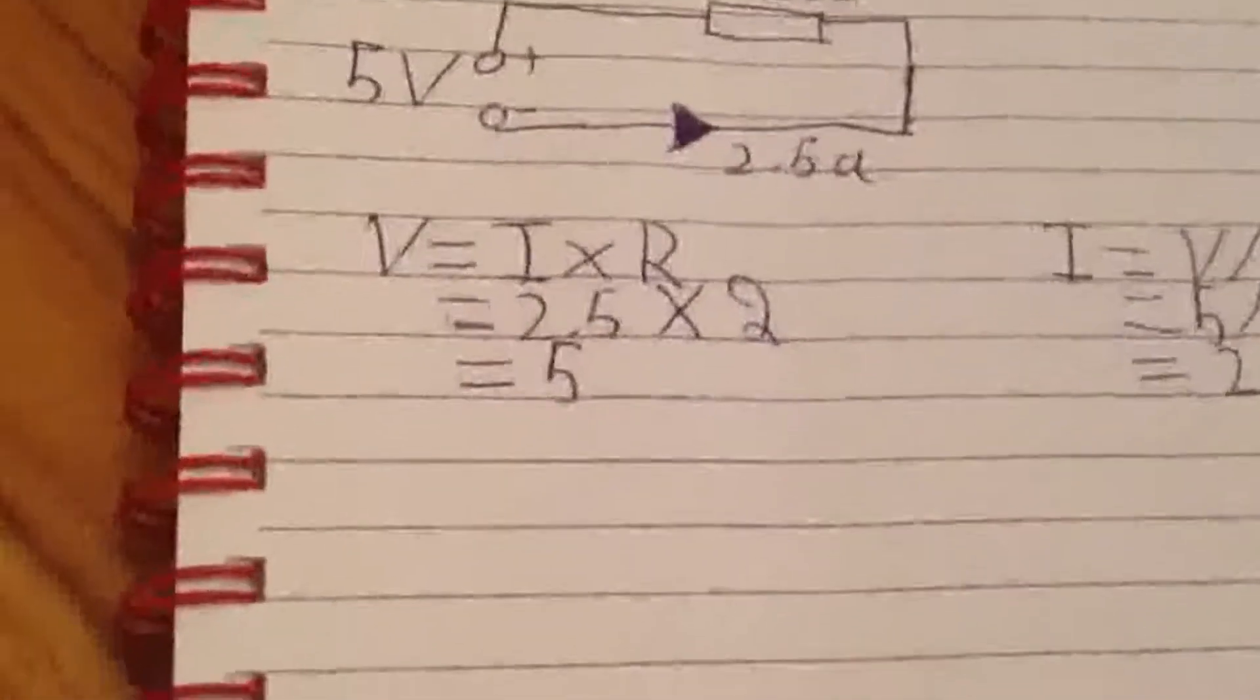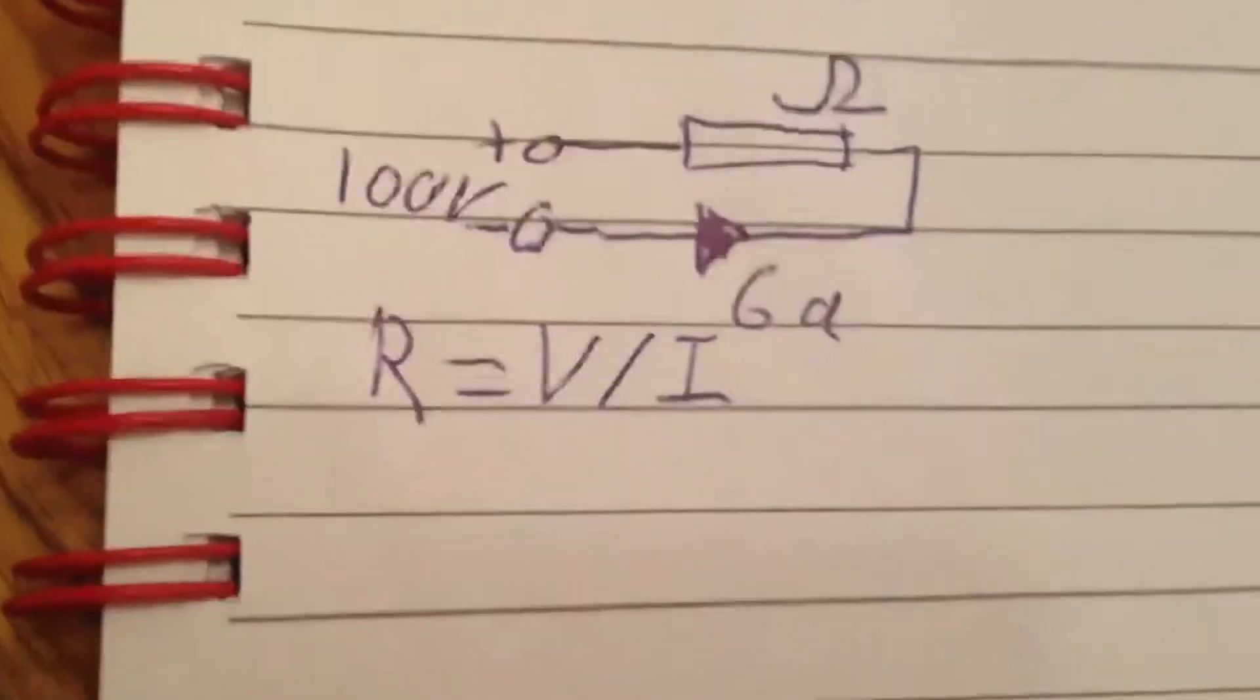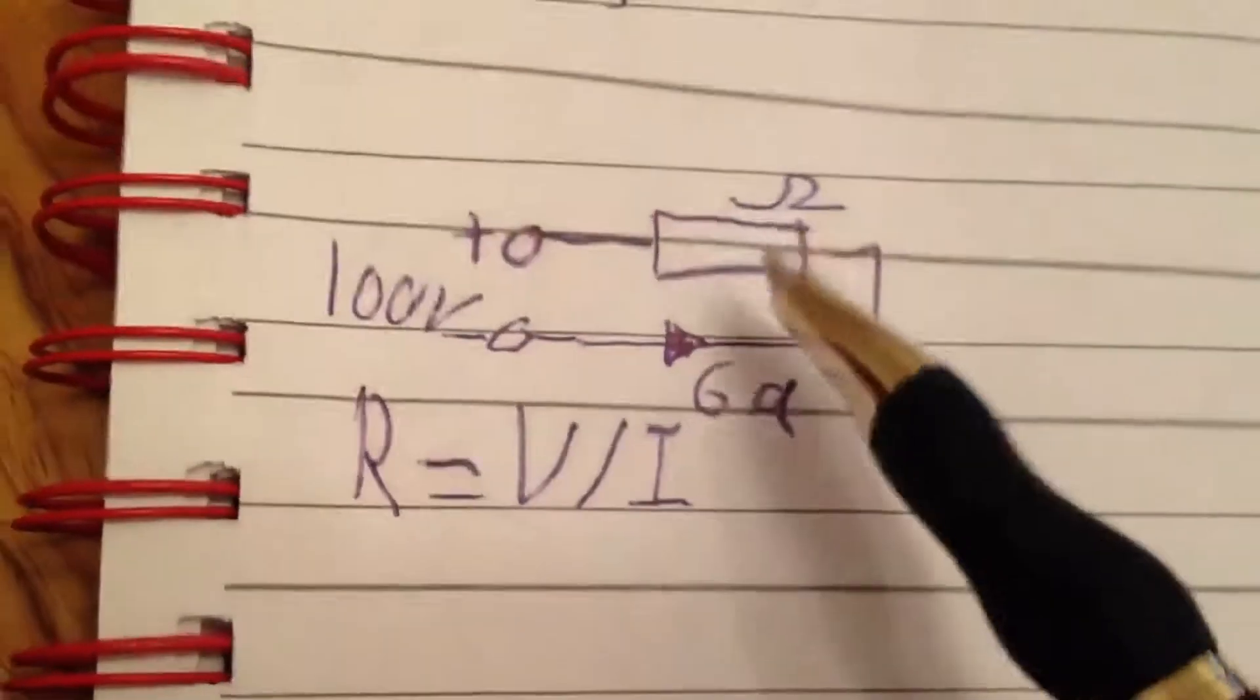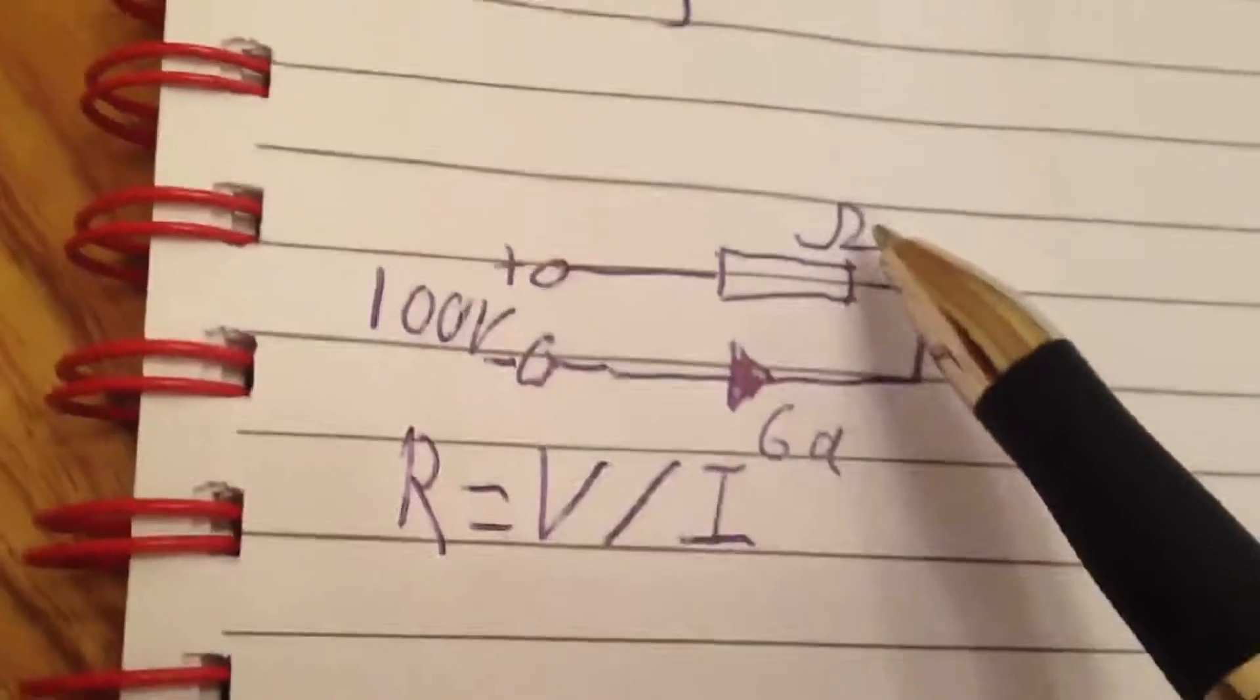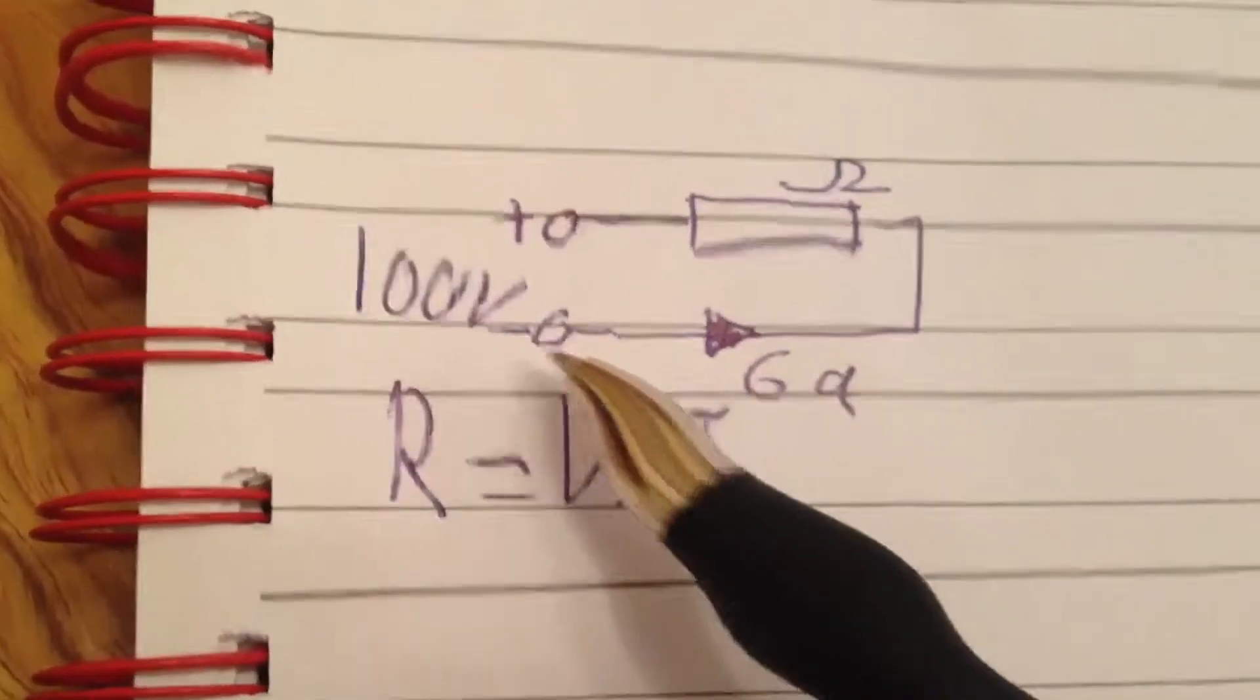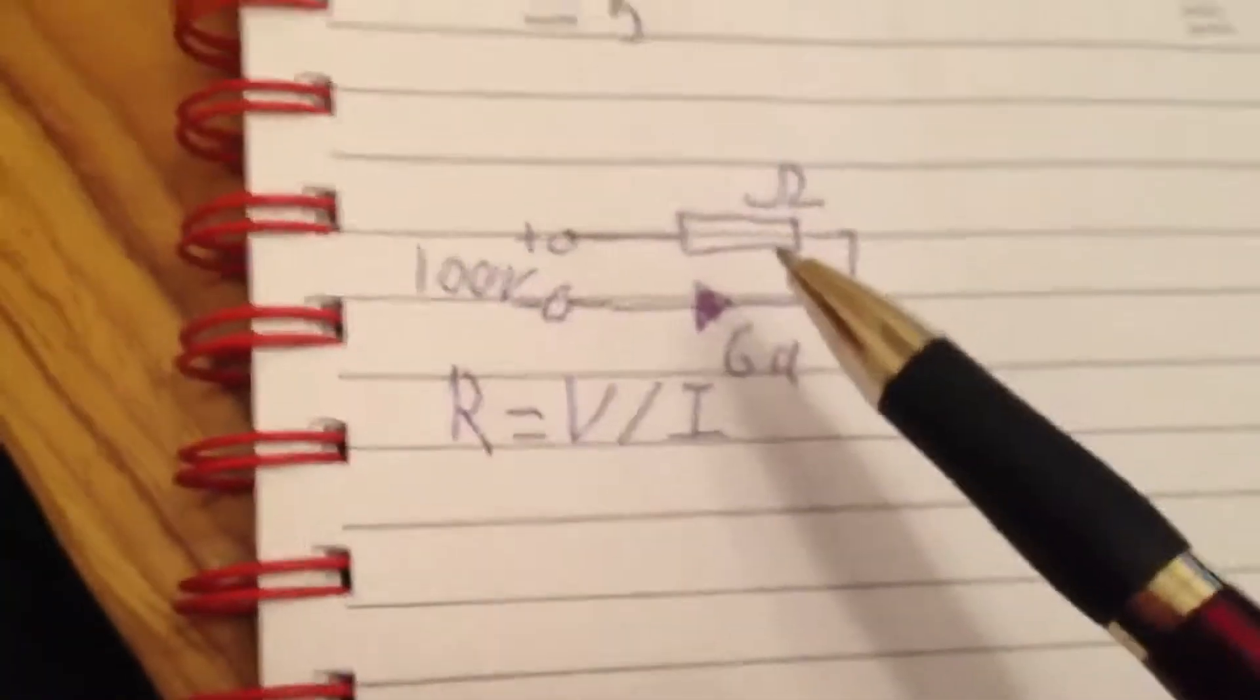Now I'm going to draw out the last circuit that we're going to do, which is for the formula R equals V divided by I. We're back again. I've drawn this out again, slightly different to the first two circuits.